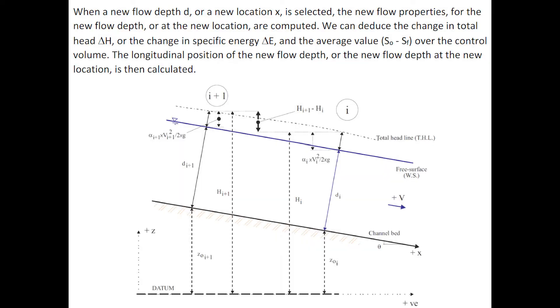When a new flow depth or a new location is selected, the new flow property or the new flow depth or the new location are computed. We can deduce the change in total head or the change in specific energy, and the difference S0 minus Sf over the control volume. The longitudinal position of the new flow depth or the new flow depth at the new location is then calculated.